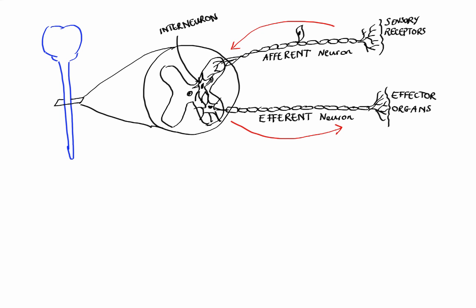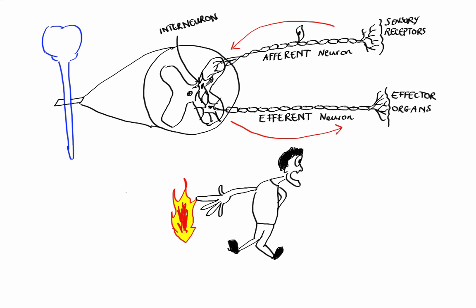For example, if you touch a hot object, sensory receptors located in your fingers would immediately initiate a signal that would travel through afferent neurons to the spinal cord. Then from there, a response signal would be initiated and would travel from the spinal cord through efferent neurons to the muscles in your hand, which would result in reflexive withdrawal of the hand. And all this would happen in just a fraction of a millisecond.